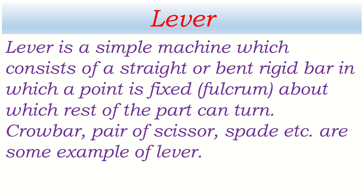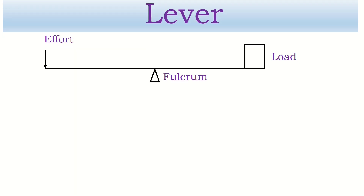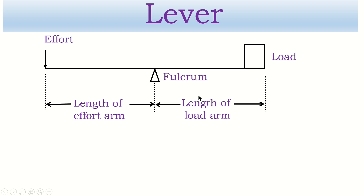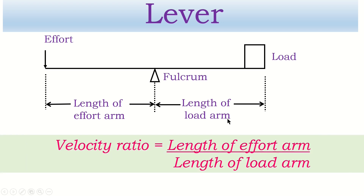There are many levers which we use in daily life. This diagram represents a lever and there are three basic components: effort, fulcrum, and load. The distance from the fulcrum to the point of application of the effort is the effort distance, which is considered as the length of the effort arm. The distance from the fulcrum to the load is the load distance, considered as the length of the load arm. The velocity ratio of a lever is the ratio of the length of the effort arm to the length of the load arm.